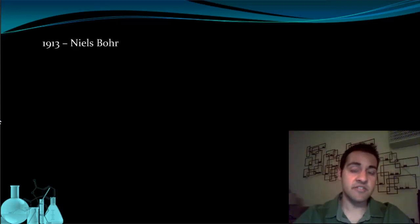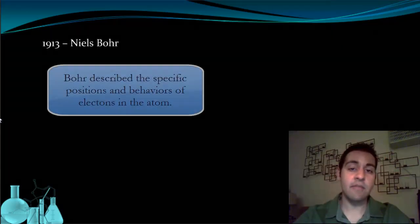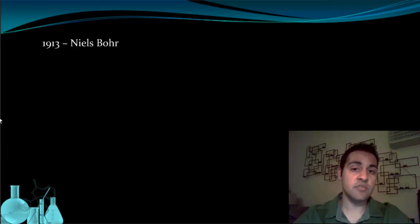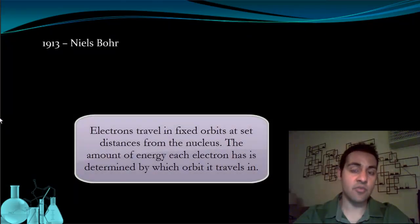In 1913, a Danish physicist named Niels Bohr improved on Rutherford's model because there was some phenomenon that Rutherford's model of the atom could not explain. In particular, Bohr improved upon Rutherford's model by specifically describing the behavior and position of electrons in the atom. He said electrons are only found traveling in fixed orbits that are at set distances from the nucleus and have set amounts of energy.